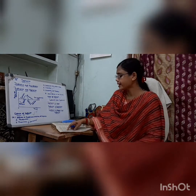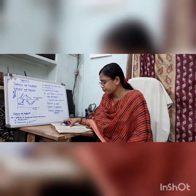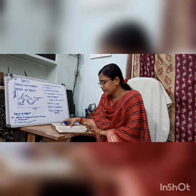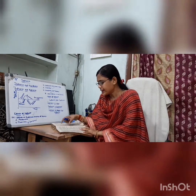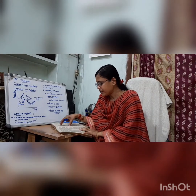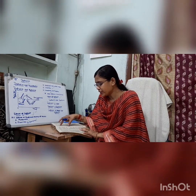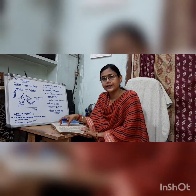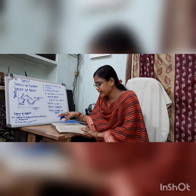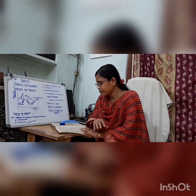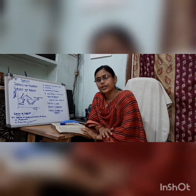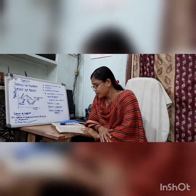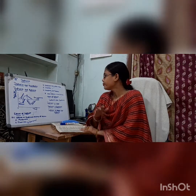Sixth, creditors and debtors. During depression, the prices fall and the value of money rises. As a result, the creditors tend to gain and debtors tend to lose.